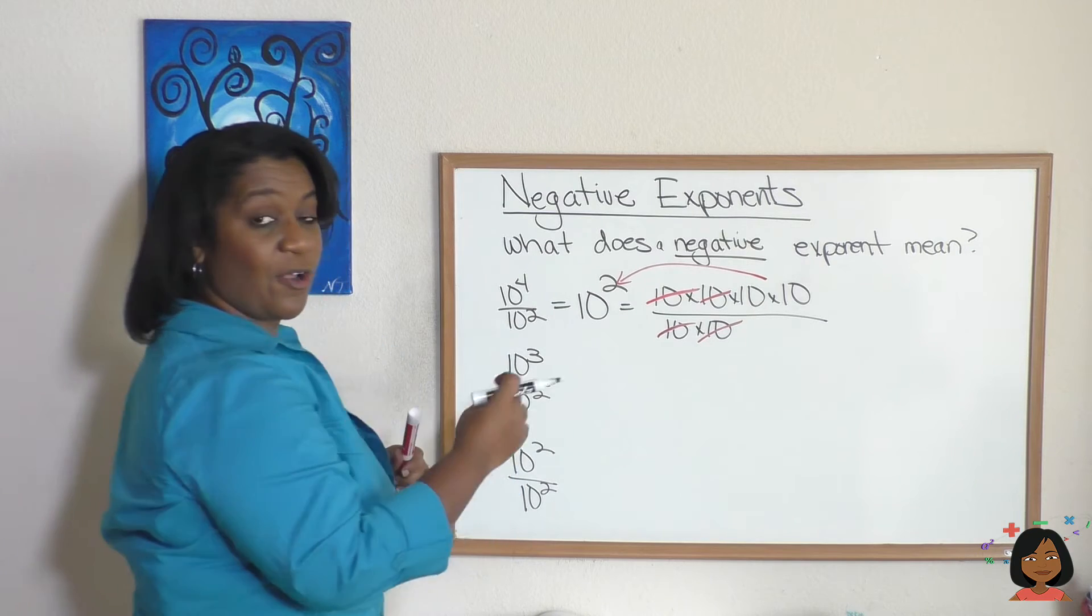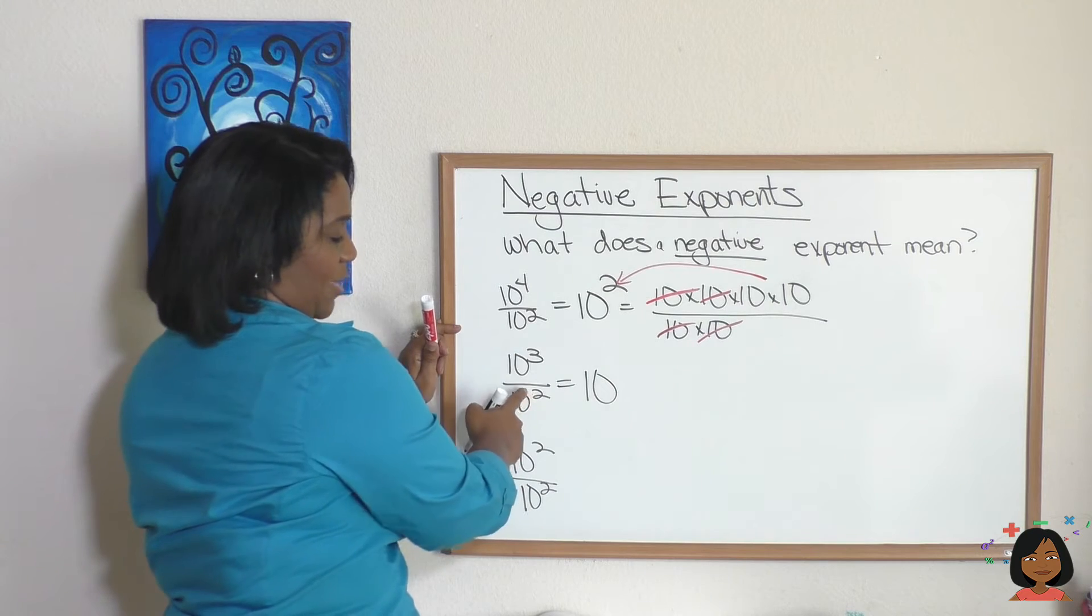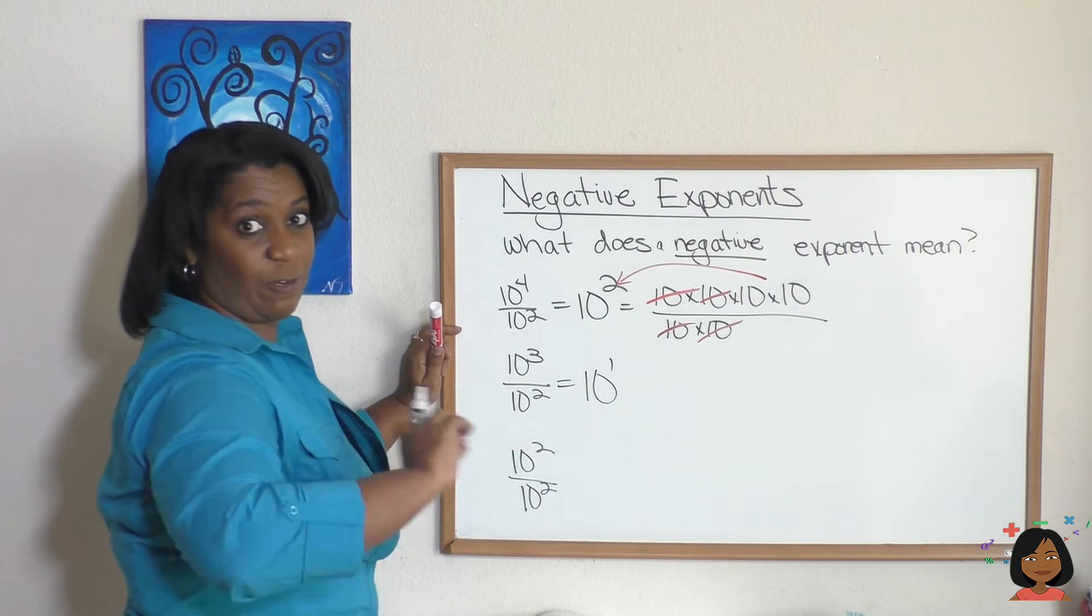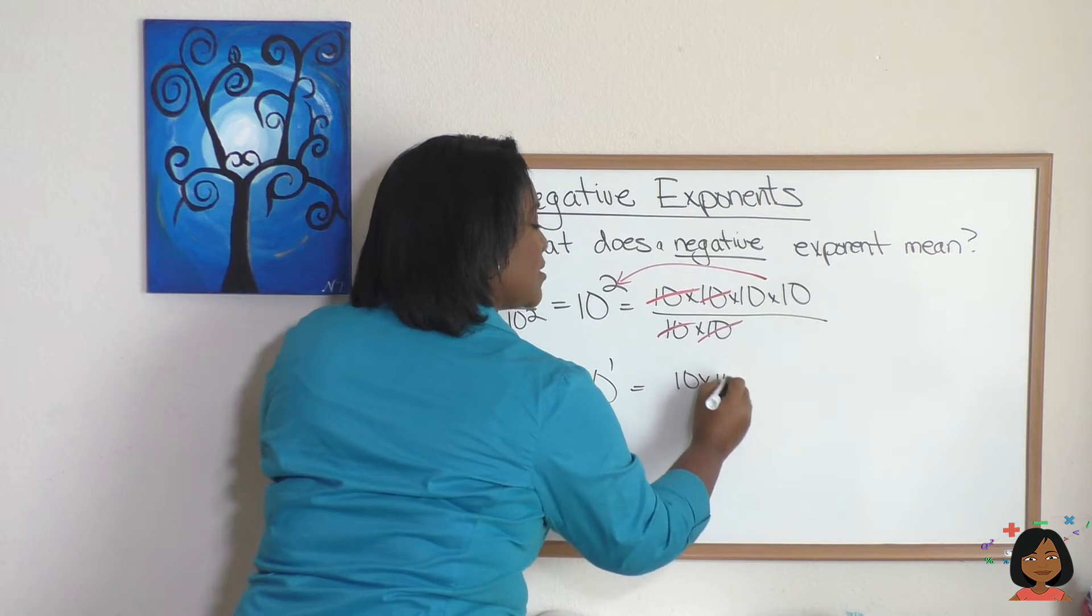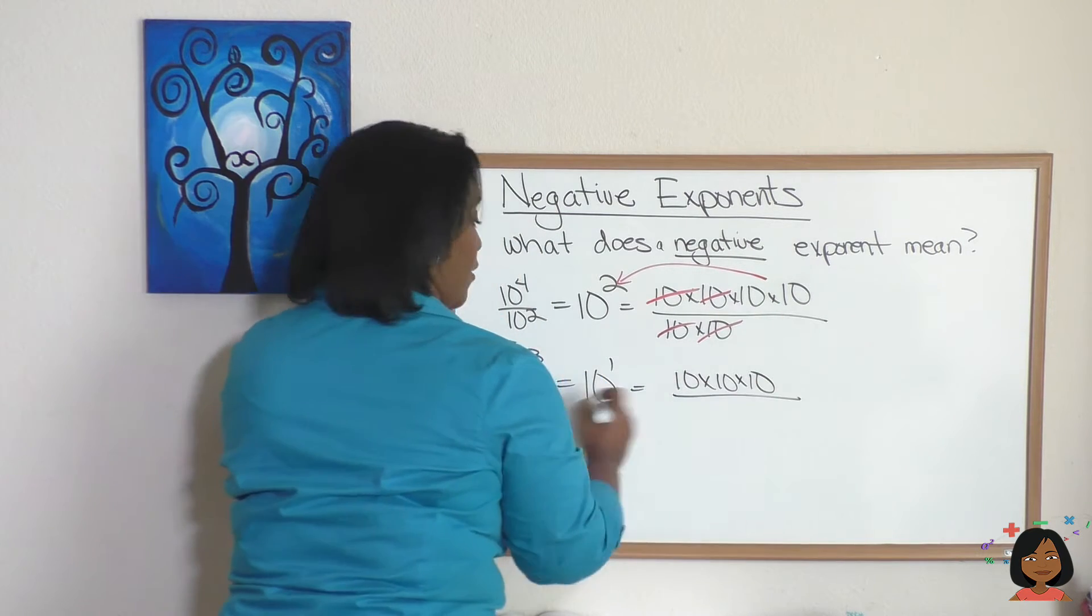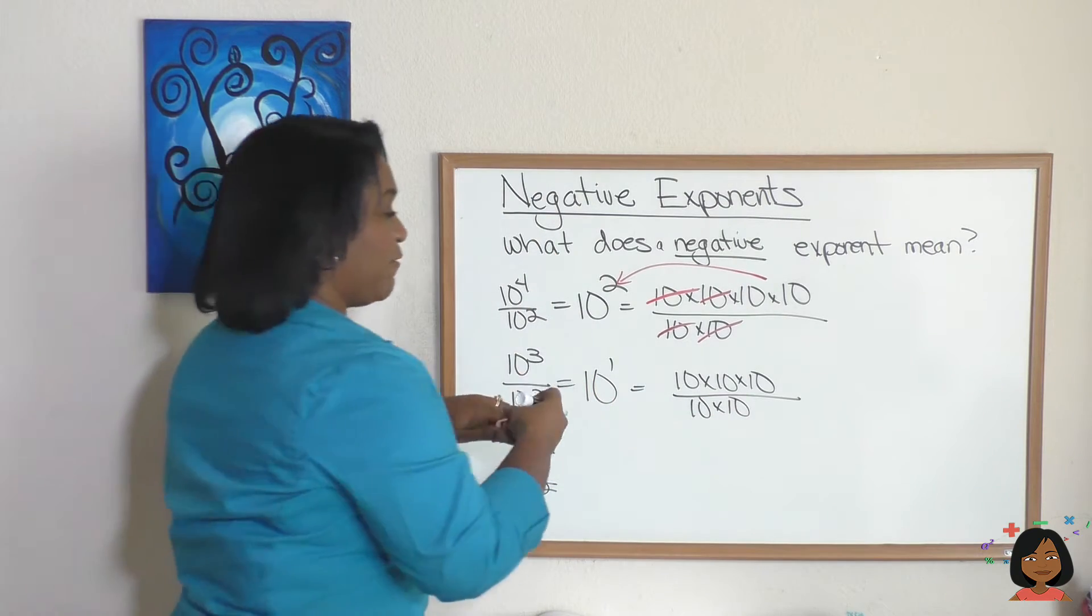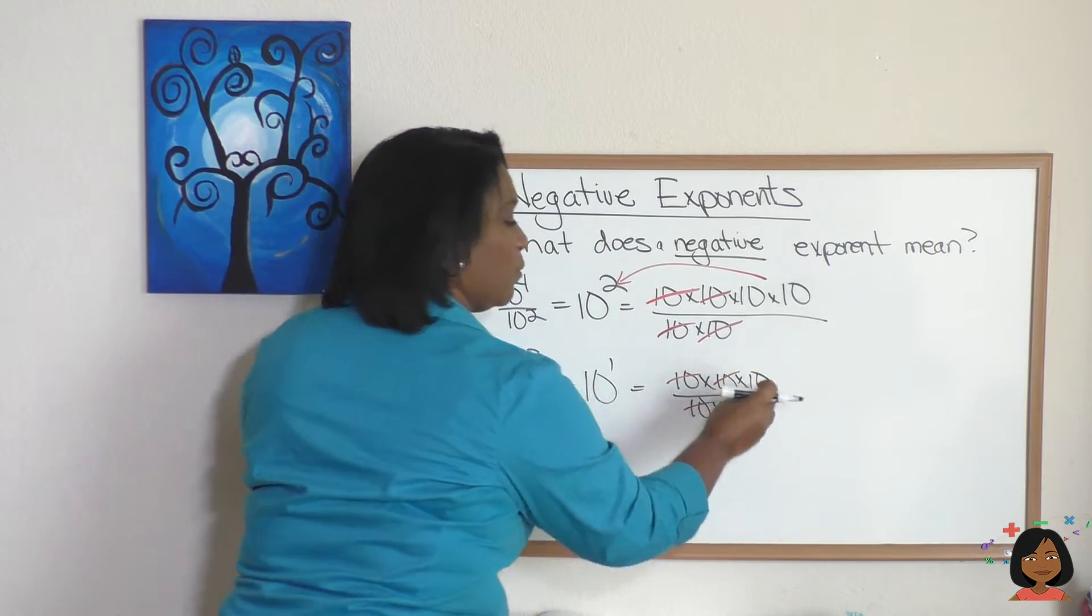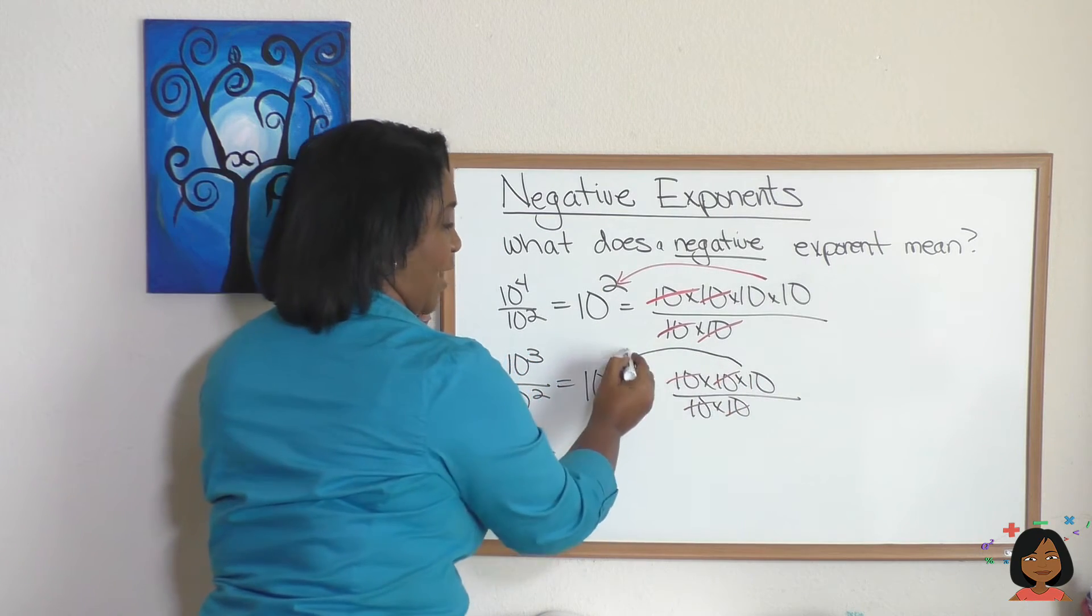10 to the third over 10 squared. It's the same thing as saying subtract the exponents. 3 minus 2 is 1. And if we write it all out, we see it means 10 times 10 times 10 over 10 times 10. And when we simplify, what's left? 10 to the first power. There's just one 10 left.